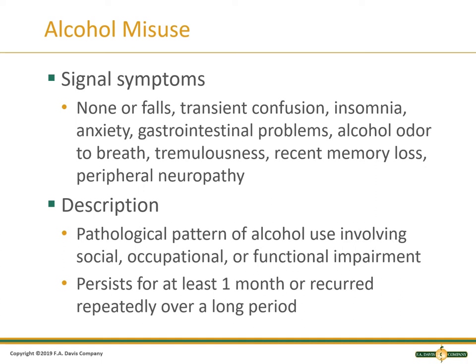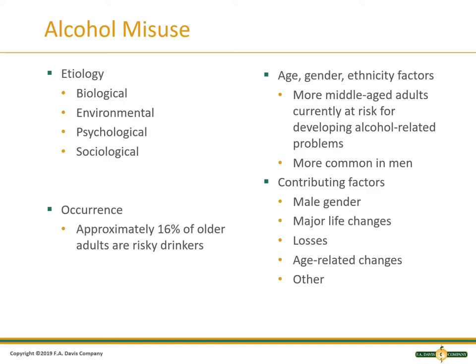Another chronic psychosocial problem that we see is alcohol misuse. Oftentimes this can be just from habit, it can be genetic, it can be from chronic alcoholism, or it can be a coping mechanism. Signal symptoms could be some transient confusion, not sleeping well, GI issues, smelling alcohol on their breath, tremors in the morning, memory changes, and some peripheral neuropathy in the fingers. This is a pathological pattern of alcohol use that encompasses social, occupational, and functional impairment. It usually occurs for at least a month and can reoccur over quite a long period of time. We look at the etiology — is it biological, environmental, psychological, sociological? Is it a coping mechanism from a stressor? Is there a genetic predisposition?